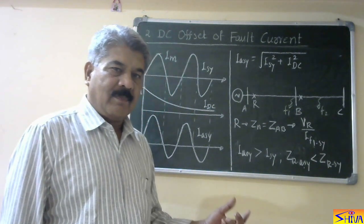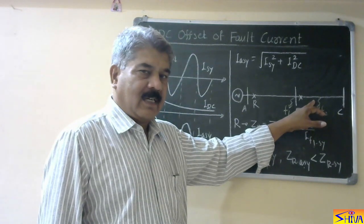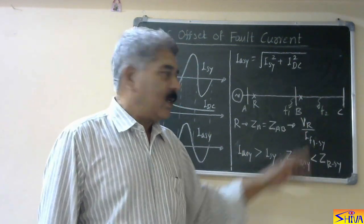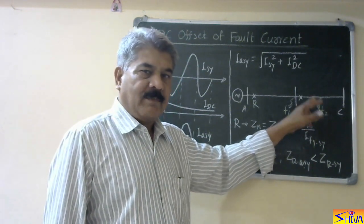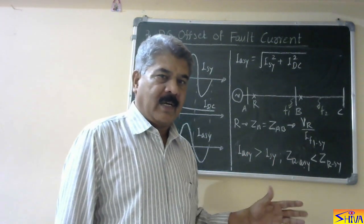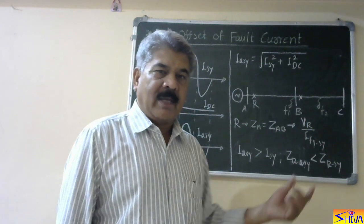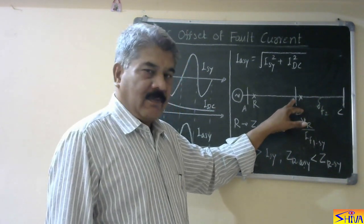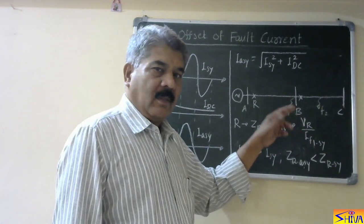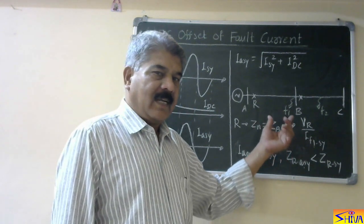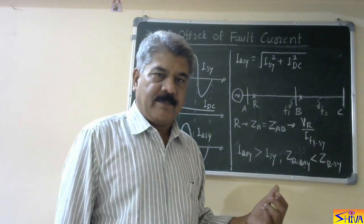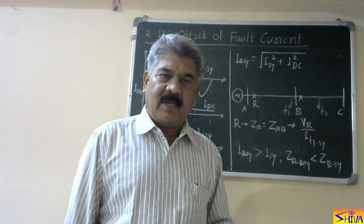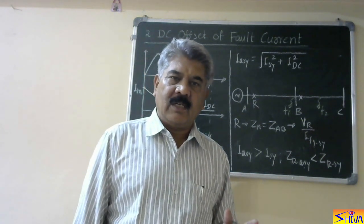So as the impedance measured is less, the relay is going to overreach. For example, if a fault occurs at point F2 — that is in the next section — and it has a symmetrical fault current component of smaller magnitude, then considering only the symmetrical component, the impedance measured will be more than ZN and the relay will not operate. But if DC offset is present, the overall magnitude of the asymmetrical fault current at F2 can equal the magnitude of the fault current at F1 with symmetrical component only. So the impedance measured by the relay becomes less than the impedance setting and the relay operates. Due to DC offset of the fault current, all distance relays — whether mho relay, impedance relay, or reactance relay — overreach.